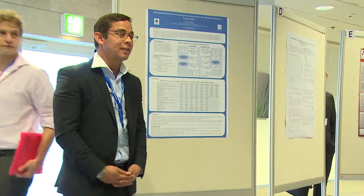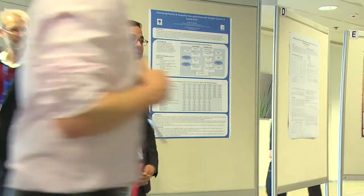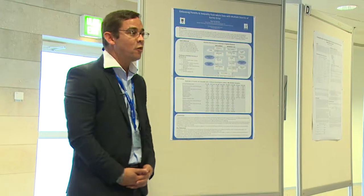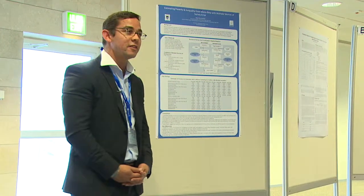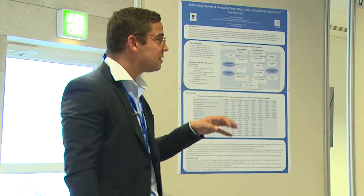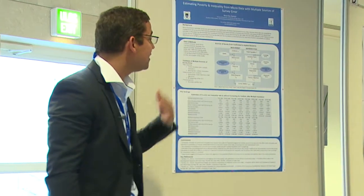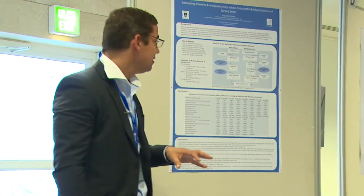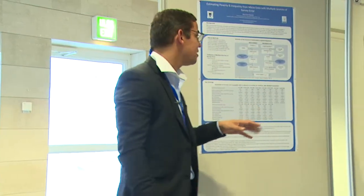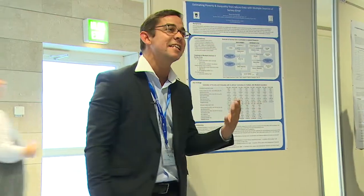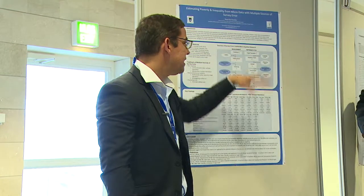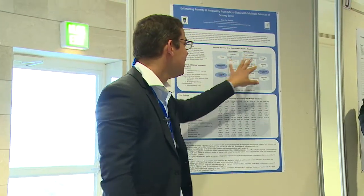This paper looks at how to estimate measures of poverty and inequality from microdata. The issue is that with any form of microdata you will encounter different sources of survey error. These are summarized in this table, separated into forms of error that researchers observe in public use data: measurement error, processing error, and non-response error, which are distinct from errors handled by the survey organization before data release.